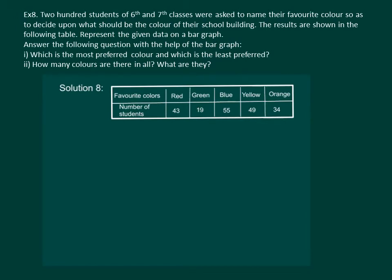Let us read the question. 200 students of 6th and 7th classes were asked to name their favorite colors so as to decide what should be the color of their school building. The results are shown in the following table. Represent the given data on a bar graph and answer the following questions.